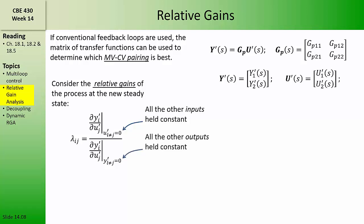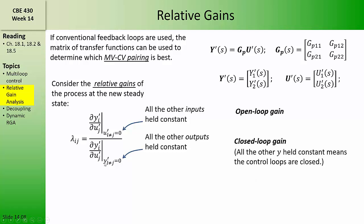The closed loop gain is the relative change in a controlled variable with respect to some change in a manipulated variable when all of the other controlled variables are held constant — that is, their perturbations are zero. We call the numerator term the open loop gain because in order to prevent all of the other manipulated variables from changing, we can simply open their control loops. And we call this one the closed loop gain because in order to keep all of the other controlled variables from changing, we could close the control loops.